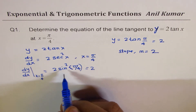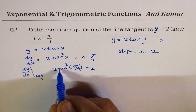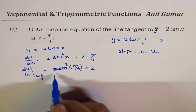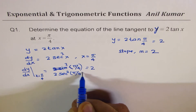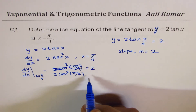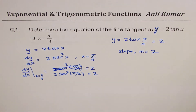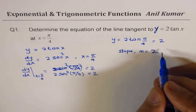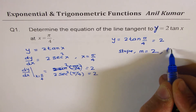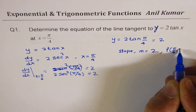So the slope m equals 2 secant squared pi by 4, which equals 2. The slope is 2, and the point on the curve is (pi by 4, 2).